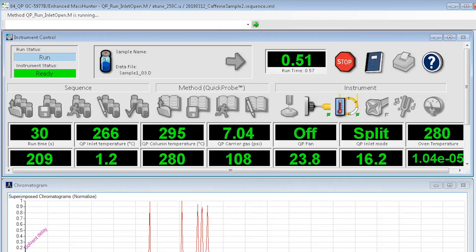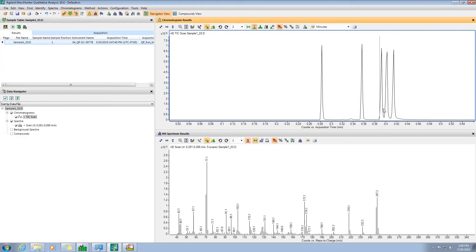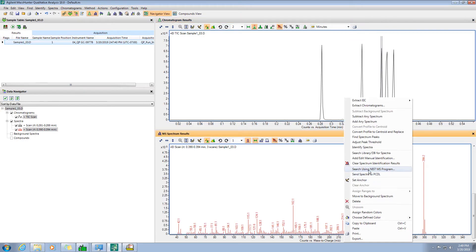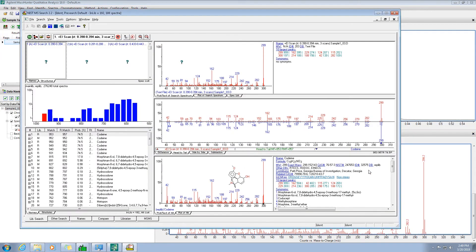And that's it. You have results in under a minute. You can see how I'm doing a quick NIST library search to identify names and structures, even at the isomer level.